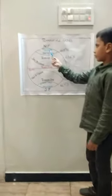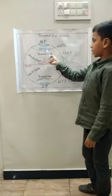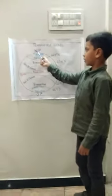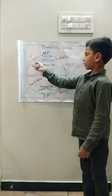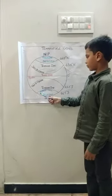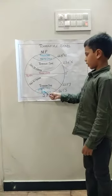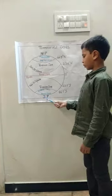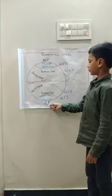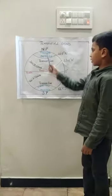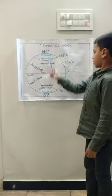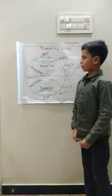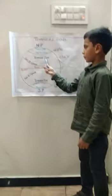Frigid zone. It lies between the Arctic Circle and the North Pole in the Northern Hemisphere, and the Antarctic Circle and the South Pole in the Southern Hemisphere. Sunlight here is minimum, so the temperature is very cold.